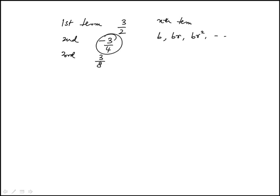The common ratio, which is r here, would be the ratio of the second term to the first. So it's this, which can be written as minus half.